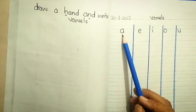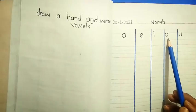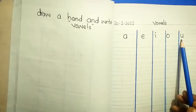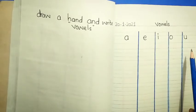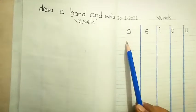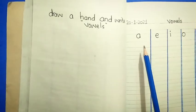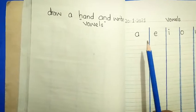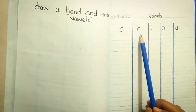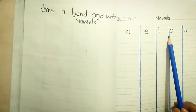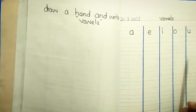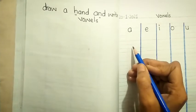Vowels: A, E, I, O, U. These are the vowels. These are the 5 vowels. Read after me. Learn after me. A, E, I, O, U. Good. Write with me.